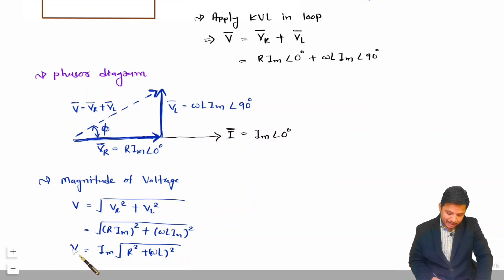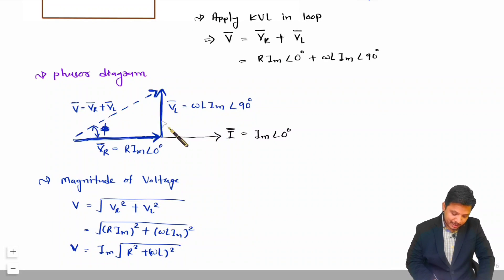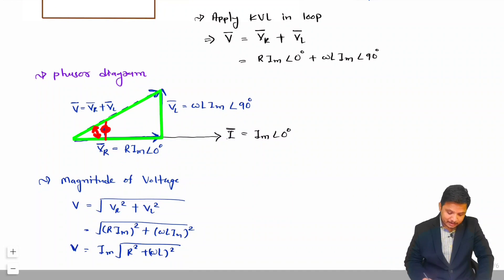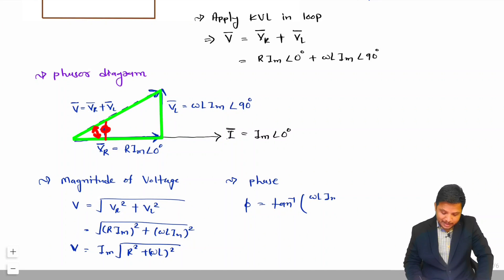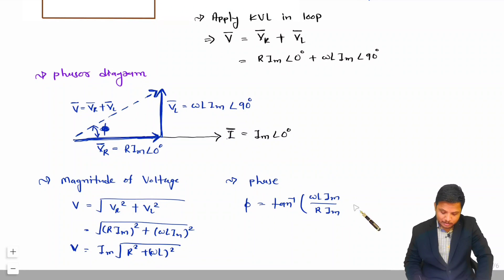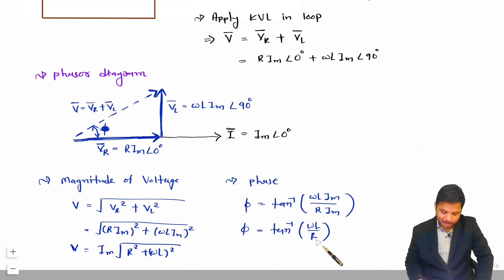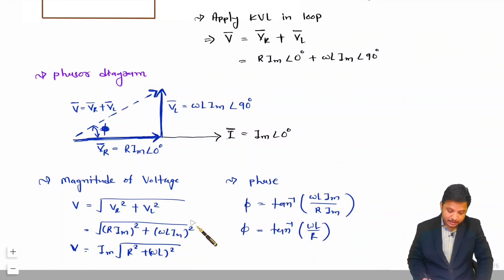That is the magnitude of voltage. To calculate the phase angle φ, using the triangle and tan(φ) = opposite/adjacent: φ = tan⁻¹(VL/VR) = tan⁻¹(ωL·Im / R·Im). Im cancels out, so φ = tan⁻¹(ωL/R). That is how we identify the phase angle of the RL series circuit.